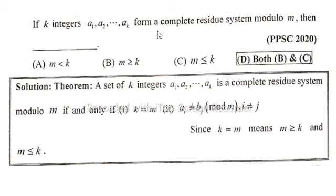Solution: Theorem - A set of k integers a₁, a₂ up to aₖ is a complete residue system modulo m if and only if condition first, k is equal to m, and second, aᵢ not equal to bⱼ (mod m), i not equal to j.